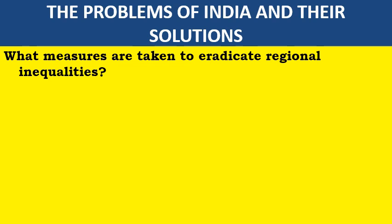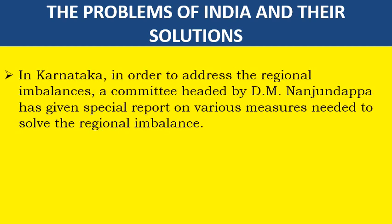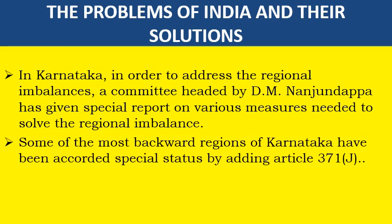What measures are taken to eradicate regional inequalities? Article 371 has been amended from A to J (371A to 371J). Through these amendments, backward regions have been given special status. In Karnataka, in order to address regional imbalances, a committee headed by Dr. D.M. Nanjundappa has given a special report on various measures needed to solve regional imbalance. Some of the most backward regions of Karnataka have been accorded special status by adding Article 371J.